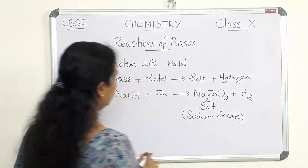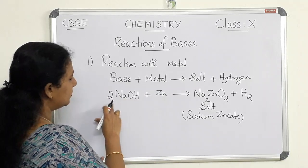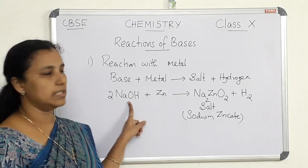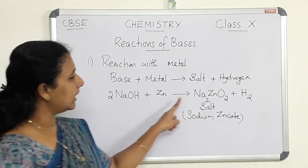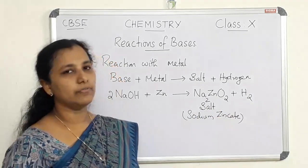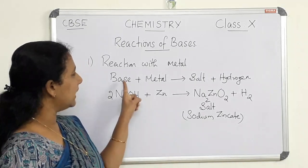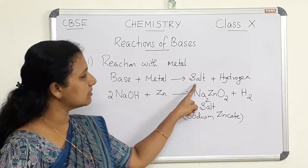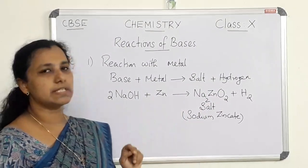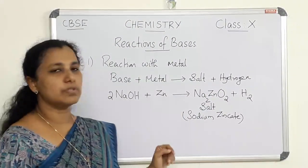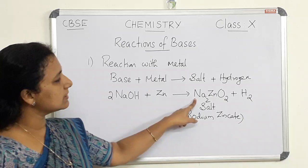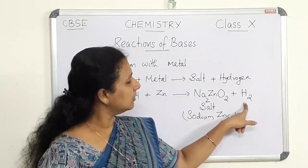This is the name of the salt form. We need to balance this equation by adding 2 as a coefficient. Sodium hydroxide is the common base we are using and zinc is the metal. In this case, sodium zincate (the salt) and hydrogen gas are formed. Similar to the reaction of acid and metal, here also the products are salt and hydrogen.